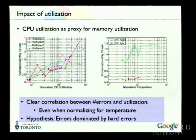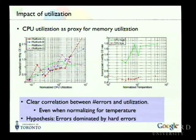One thing we really wished we had was information about physical addresses. With address information we could say whether it's one bit at one address that's bad, or whether we're seeing a whole row or column fail. We didn't have that information last year because it wasn't being collected, but it is being collected now as part of the follow-up study. When machines go through repairs, you run a memory tester which does give address information and can help diagnose whether you're dealing with hard errors and whether it's a whole chip, row, or column being bad.